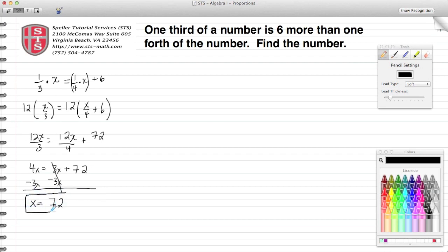Now we need to check my work to make sure that that is correct. Doing a check, I'm going to substitute 72 into these X values in my original equation. So here I have one-third of 72 is equal to one-fourth of 72 plus 6. On to the left, 72 thirds is equal to 72 fourths plus 6.